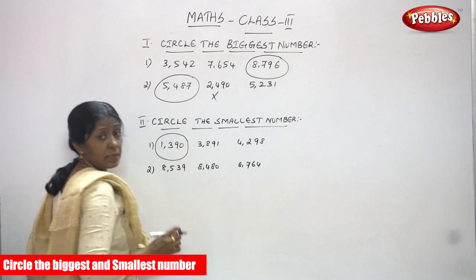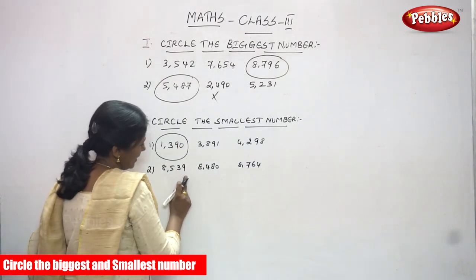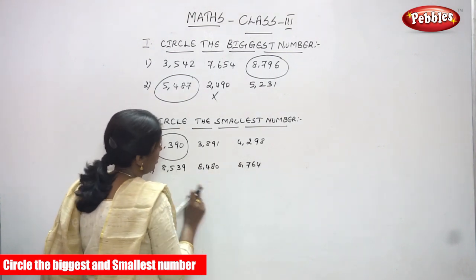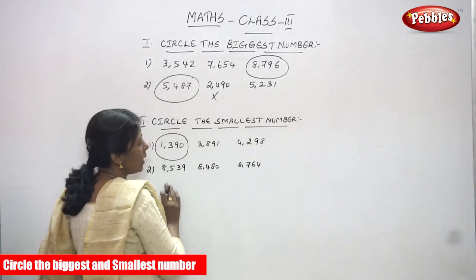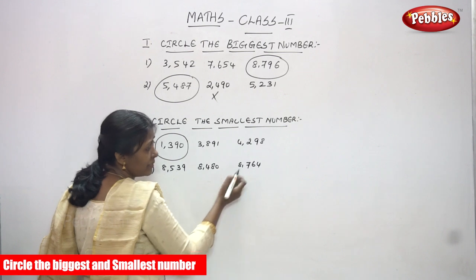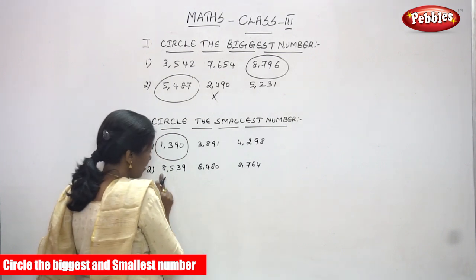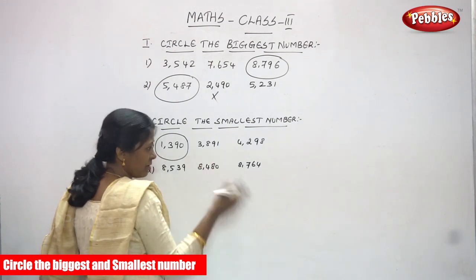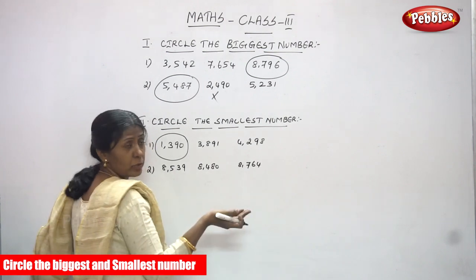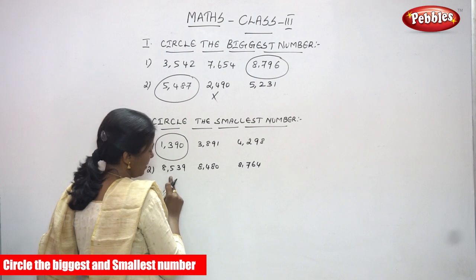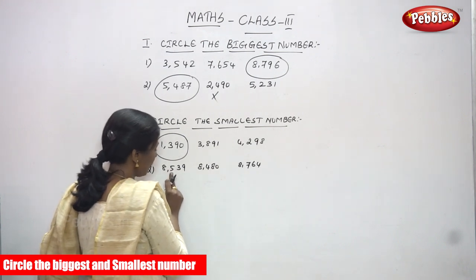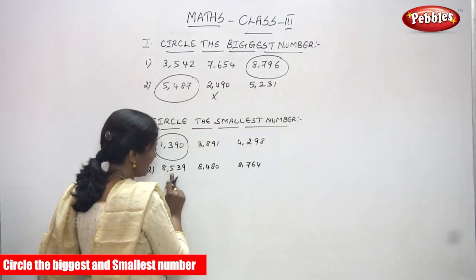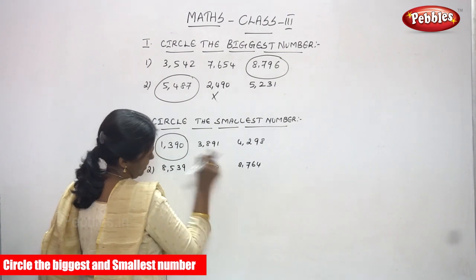The next set: 8539, 8480, and 8764. These are all four-digit numbers. The first number starts with 8000, the second also starts with 8000, and the third also starts with 8000. All are the same in the thousands place, so now you need to focus on the hundreds place value. The hundreds digits are: 5 in 8539 (500), 4 in 8480 (400), and 7 in 8764 (700).